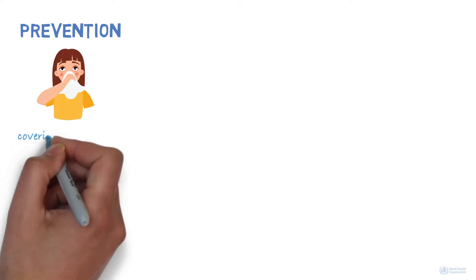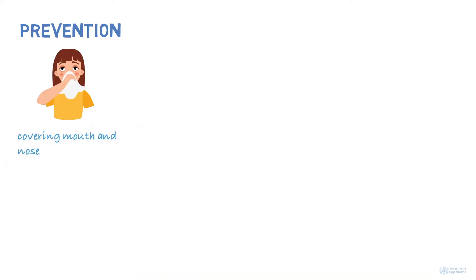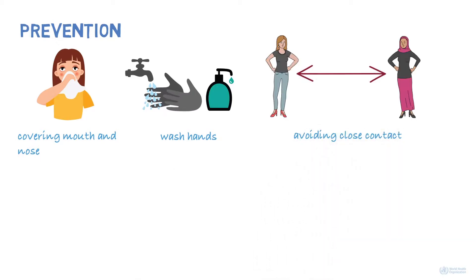How do we prevent transmission of the virus? There are a number of effective ways to prevent the spread of the disease. These include covering your mouth and nose when coughing or sneezing with a flexed elbow or tissue, and throwing the tissue in a closed bin immediately after use. Wash hands regularly with soap and water or an alcohol-based hand rub, maintaining at least one meter distance from people, and the appropriate use of masks and personal protective equipment, especially in health settings.